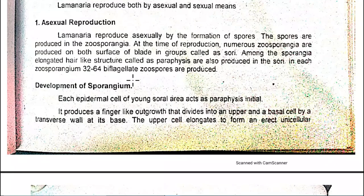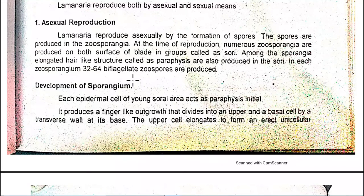The sori are groups of zoosporangia on the blade surface. Among these spores, elongated hair-like structures called paraphyses are produced. In each sporangium, 32 to 64 biflagellated zoospores are produced.